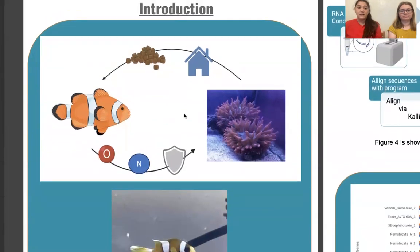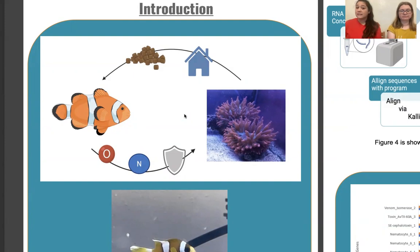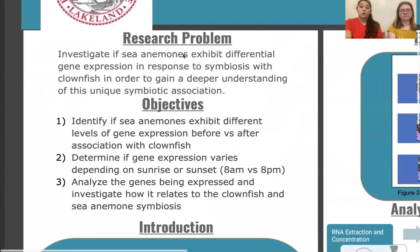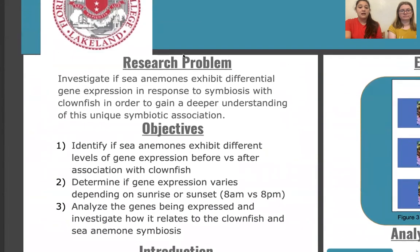Due to these direct benefits and unique association patterns between clownfish and sea anemones, we decided to look at whether there was gene expression associated with these benefits. In other cnidarians, for example corals, which are in the same class as sea anemones, we see that when they acquire their zooxanthellae they shift their gene expression. We figured that if corals are able to do this, we wanted to see if sea anemones and clownfish are able to do this as well. Our main research question was to see if sea anemones have any differential gene expression before versus after association.